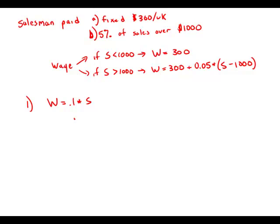Case two tells us that the wage, which we know is 0.1 times S, equals 300 plus 0.05 times (S minus 1,000). Here we have an equation that we could solve for S, and if we could solve for S, then we could solve for the wage. We won't actually go through the solution — that's not required in data sufficiency. All that's required is knowing that we could solve. So statement number one is sufficient to answer the question.